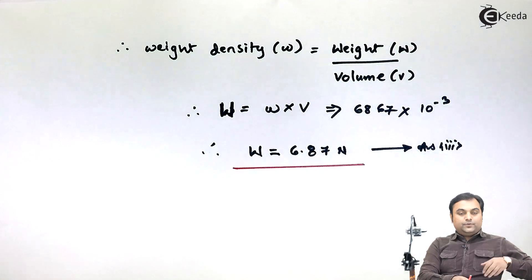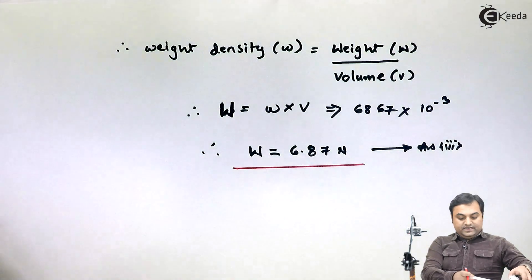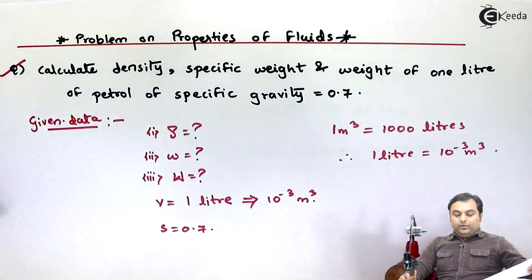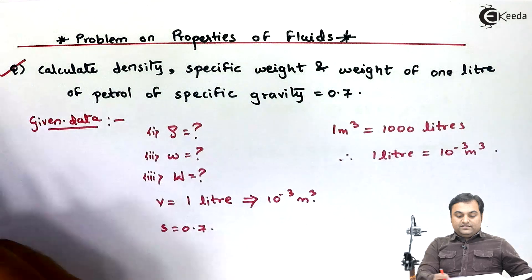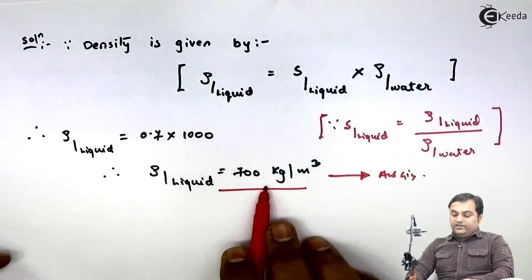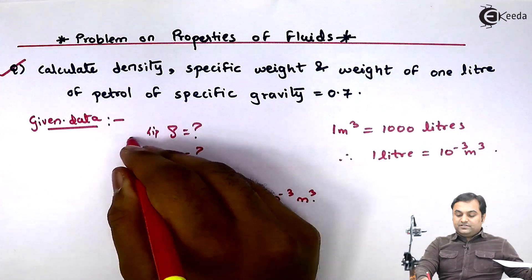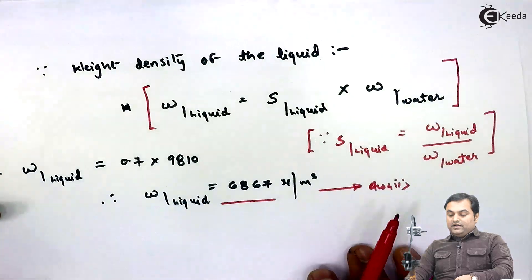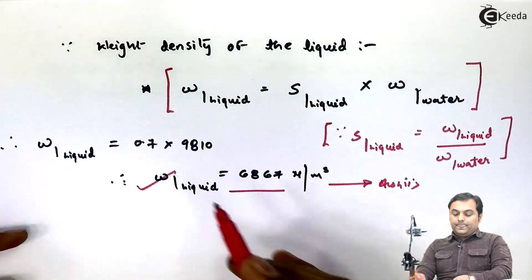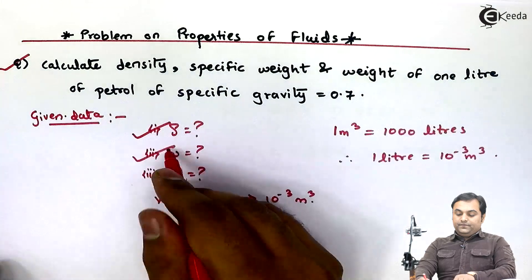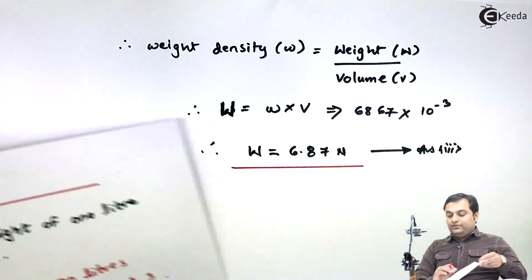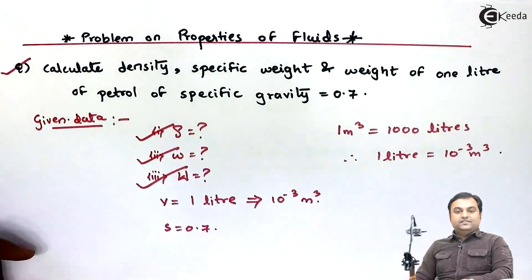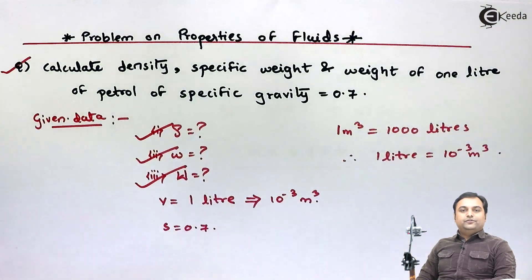So in this problem there were three things asked. The first was density or mass density — our answer was 700 kg per meter cube. The second was weight density — our answer is 6867 newton per meter cube. The last one was the weight of the liquid, which we found to be 6.87 newton. With this, the problem on properties of fluid is complete.